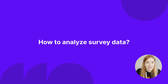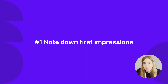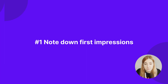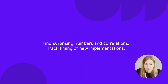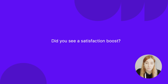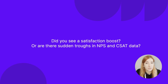So that's your report, but how do you actually analyze survey data? Let's go through the five steps. Step one: note down any patterns you see in your research. Try to find surprising numbers or peculiar correlations of data. Track when you made new implementations and any other changes to your product or service. Did satisfaction ratings spike, or do you see troughs immediately after some changes? That could tell you a lot about the success or failure of a certain adaptation.